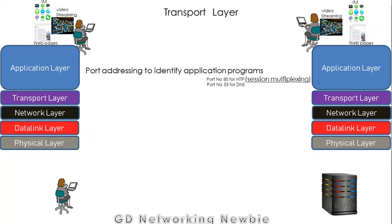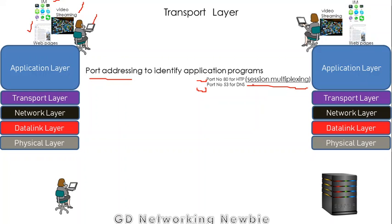The next layer is the transport layer. The transport layer provides a port addressing mechanism. On a single computer we may be running different applications — instant messaging, video conferencing, different web pages — simultaneously. To differentiate these application programs, TCP as a transport layer protocol provides port addressing, which allows multiple application programs to use the network at the same time. This is also known as session multiplexing. Well-known port numbers include 80 for HTTP and 53 for DNS.